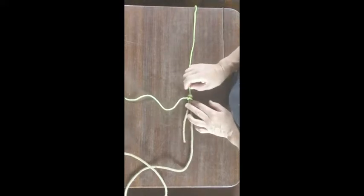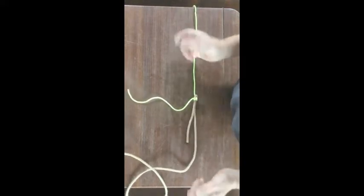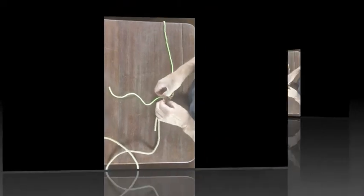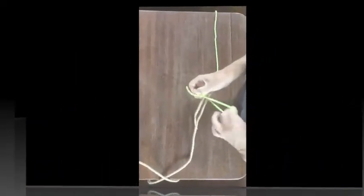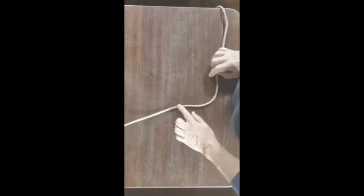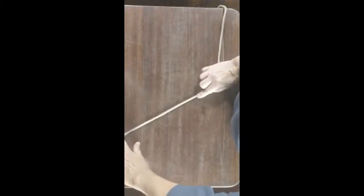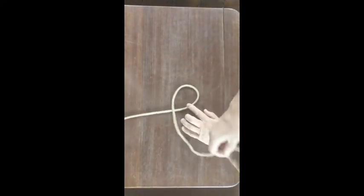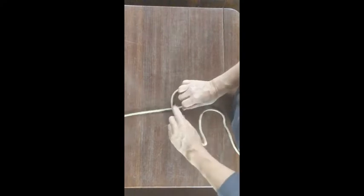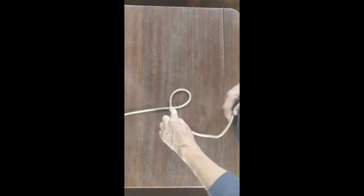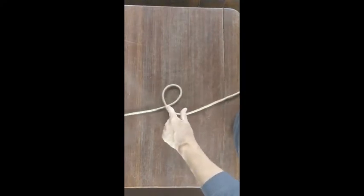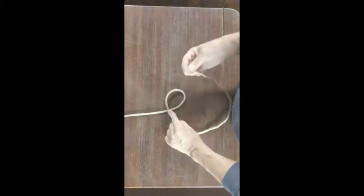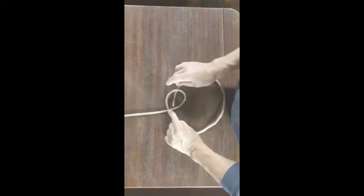Okay, so that's the sheet bend. Now the bowline, the one that everybody seems to for some reason struggle with. There's the standing part of the rope, here's the working end, just take it over, working part of the rope over the top. Now the rabbit bit, the rabbit comes out of the hole.